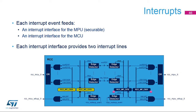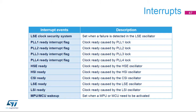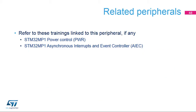The RCC provides two interrupt interfaces, one for the MPU and one for the MCU. The MPU interrupt interface can be switched to secure mode via the TZEN bit if needed. For each processor, the RCC provides a general-purpose interrupt and a wake-up interrupt. There are mainly three kinds of events: clock failure events, oscillators and PLLs ready events, and wake-up events. In addition to this training, you may find the power control and interrupt controller trainings useful. Thanks for your attention.